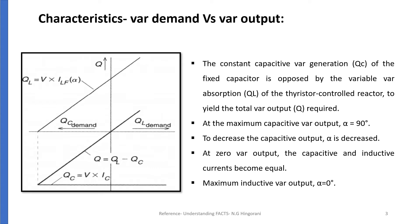Here we can see the VI Characteristics and the VAR Demand vs VAR Output Characteristics. QC is the Reactive Power Supplied by the Capacitor. It is a fixed power and is given by QC = V × IC.